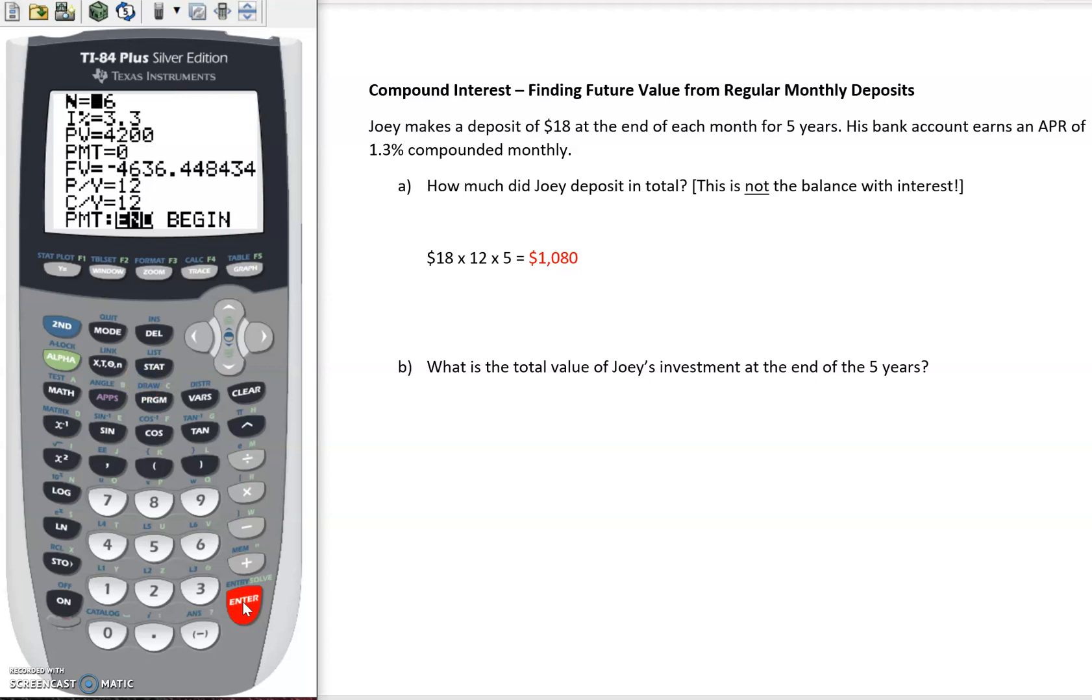N is going to be the total number of both deposits and compounds in this case. So we're doing this for five years and we have monthly deposits and monthly compounds. So five times 12.